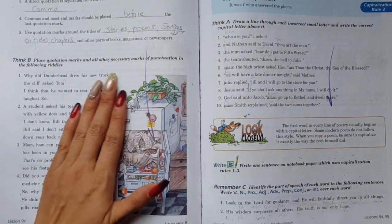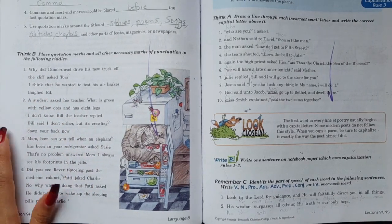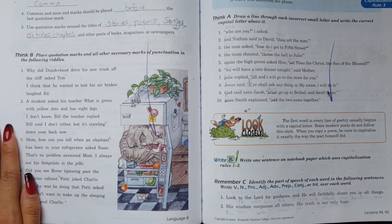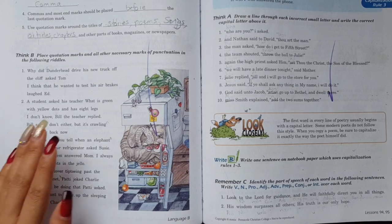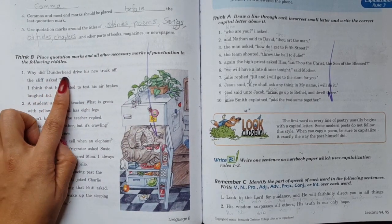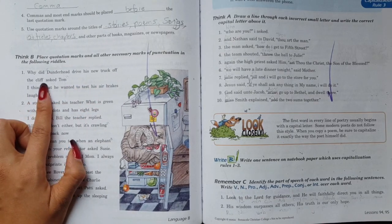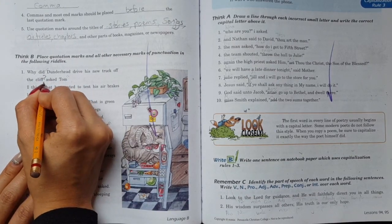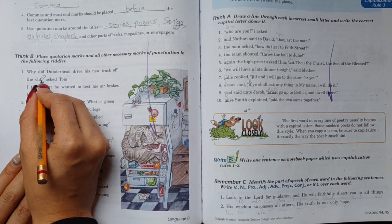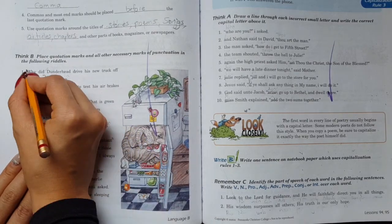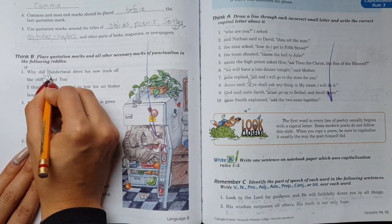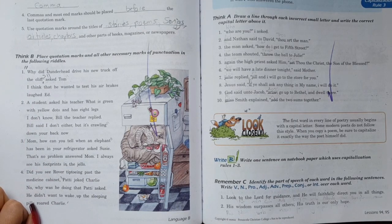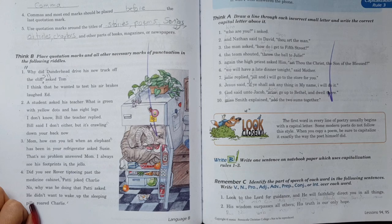Very good. So now let's move on to Think B. Think B says place quotation marks and all other necessary marks of punctuation in the following rules. Why did Thunderhead drive his new truck off the cliff, asked Tom. So Tom asked. Since I know I'm going to put a question mark because he asked, those were the exact words he said. I'll put the quotation marks.